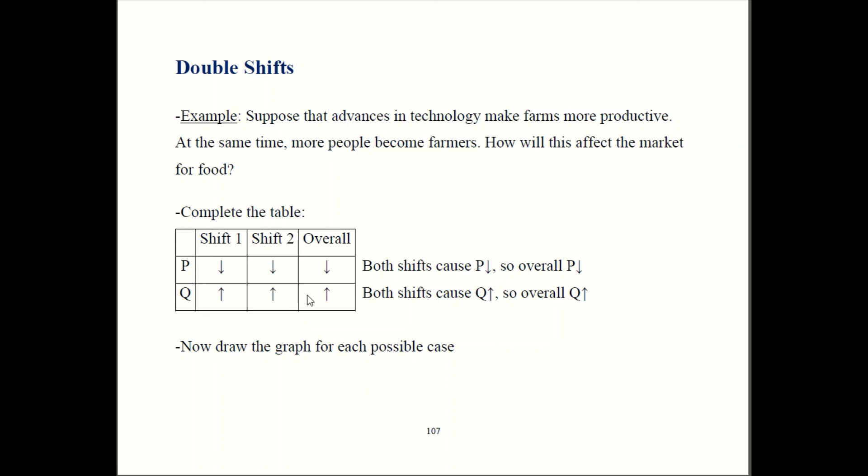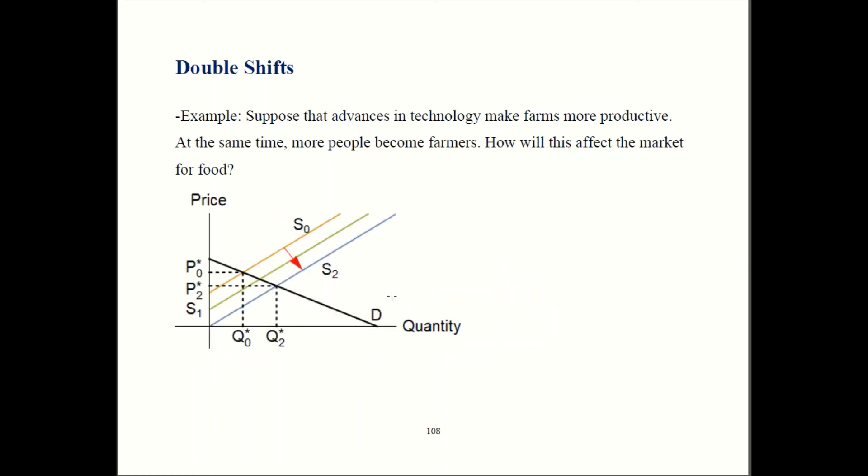So, we only have one graph to draw for that. So, here's demand and here's the original supply curve. So, technology causes supply shift out here to this green curve. We have more farmers, supply shifts out again to this blue curve here at S2 now.